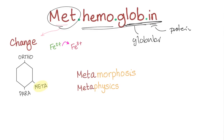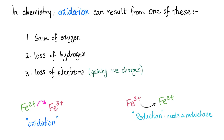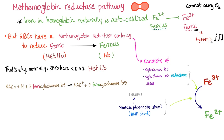In chemistry, oxidation can mean gain of oxygen, loss of hydrogen, or loss of electrons. Gaining a positive charge is essentially oxidation. So when iron goes from ferrous to ferric, this is oxidation — you gained a positive charge and lost an electron. The opposite is reduction. That's why to convert methemoglobin back into normal hemoglobin, you need a reductase enzyme, because this is a reduction.